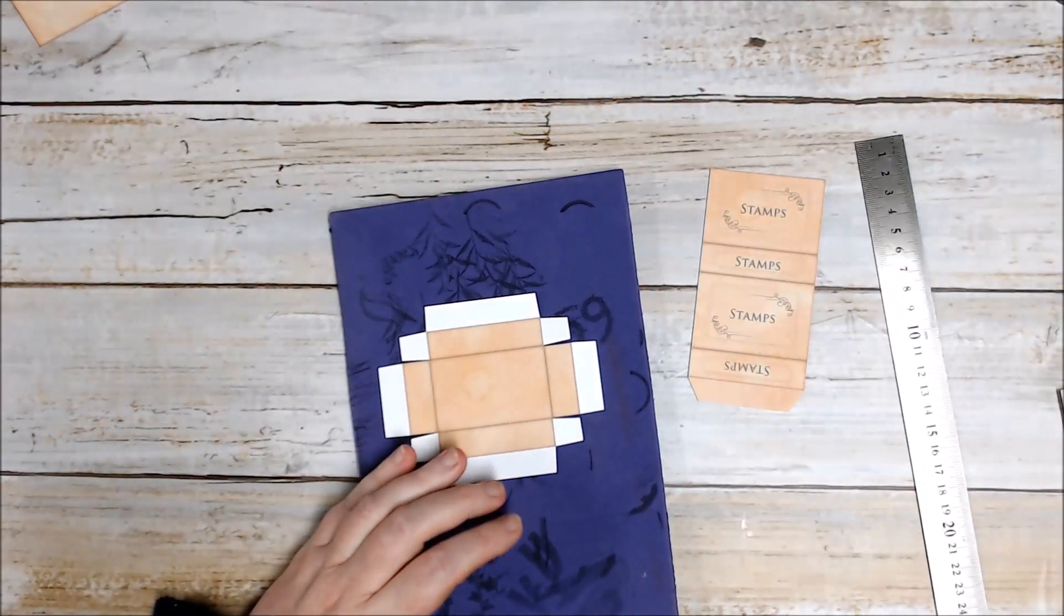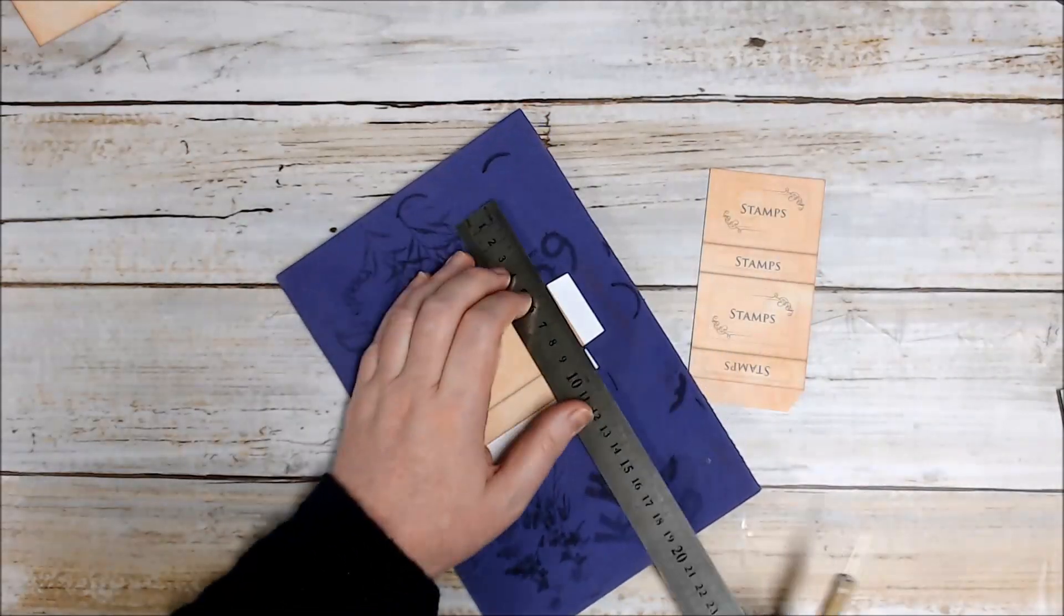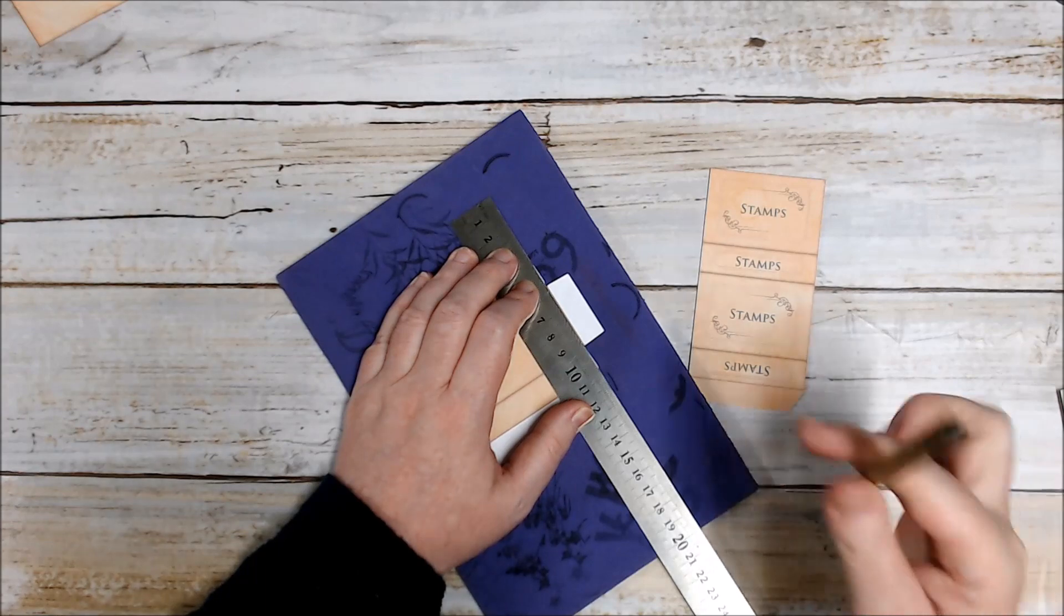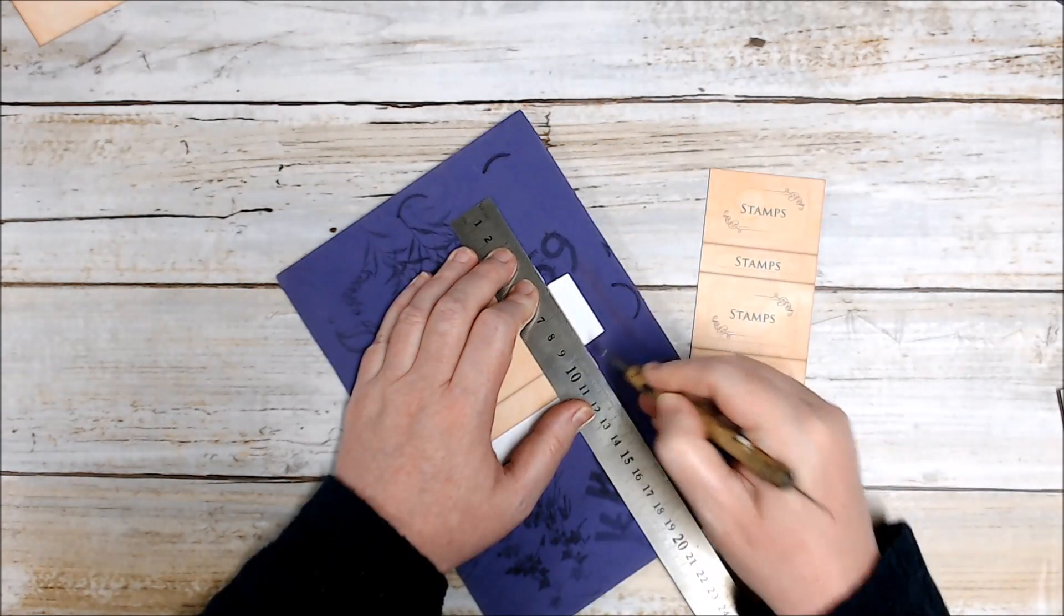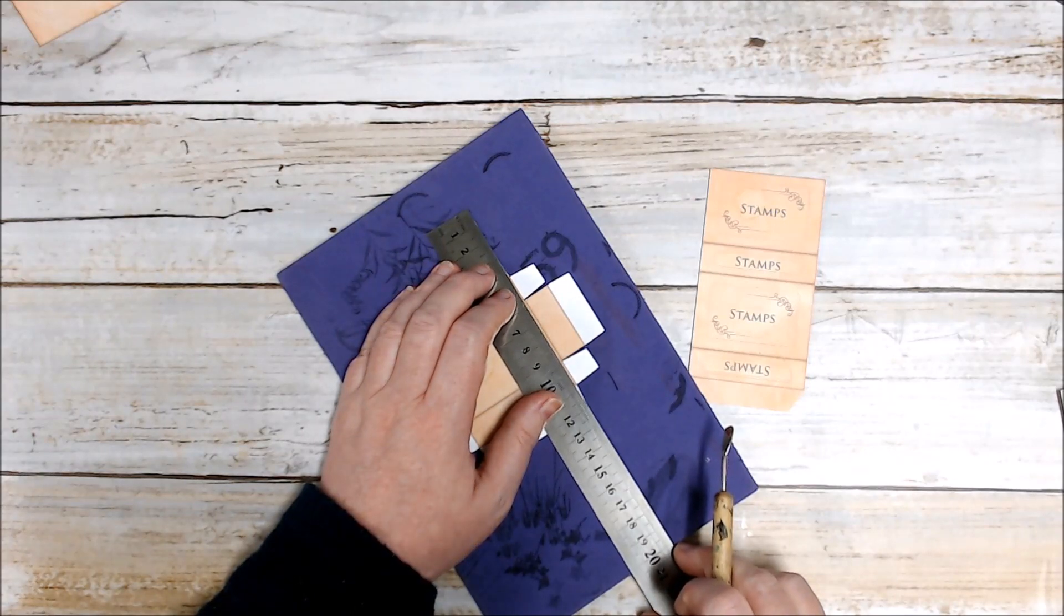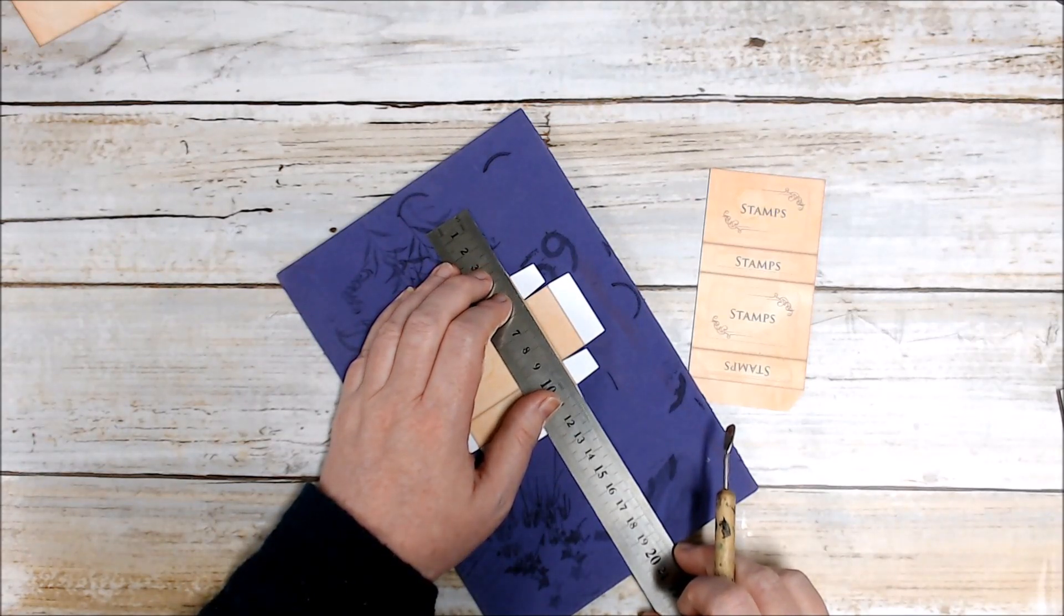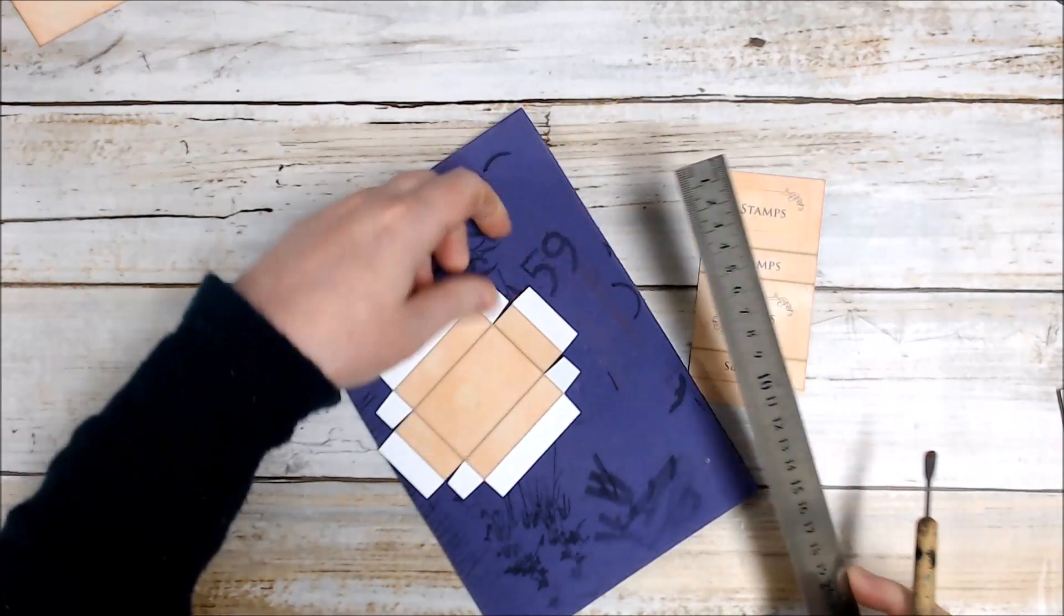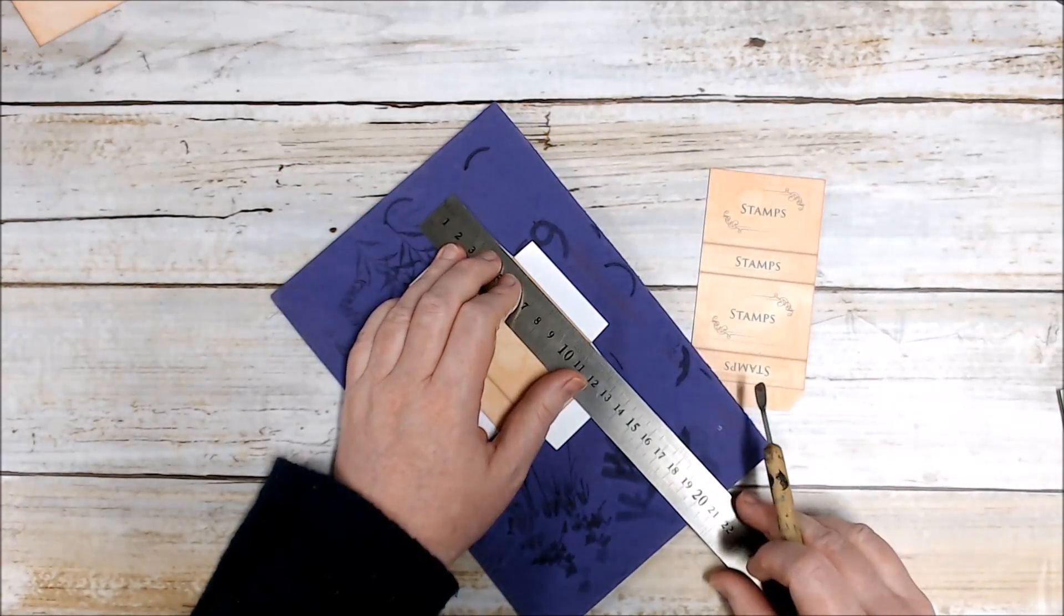Next we're going to score the lines. You want to score across the edge of these white flaps and along the edge of the base of what will be the box. So you're going to do two score lines on each side of the matchbox.